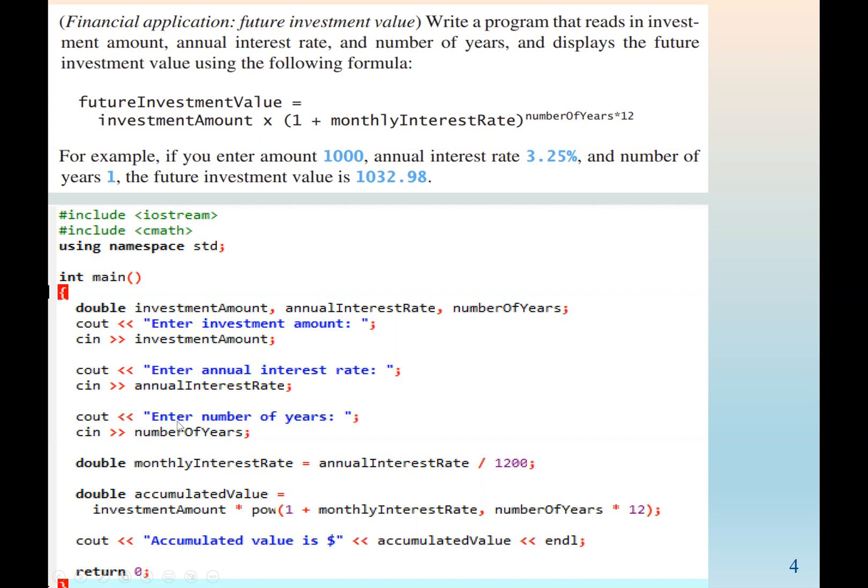After we enter the three values, then we do our operation, arithmetic operation. The formula is given to us already. First, we find the monthly interest rate, which will be the annual interest rate divided by 1200.